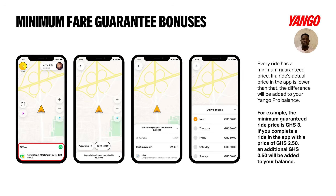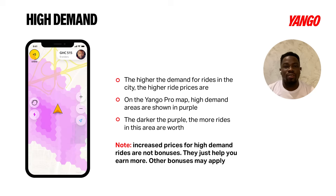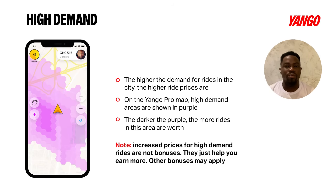For minimum guaranteed income, we guarantee you an amount of money to make on any given day. If you're unable to meet that amount, we will give you the difference. On certain times of the day, on your map, you'll see that the map is lighter purple in color. This tells you that the area has high demand and you could move there to work — high demand means more money for drivers.